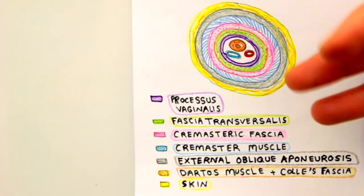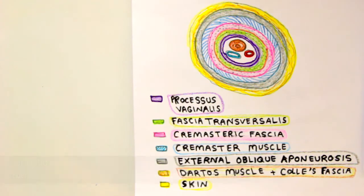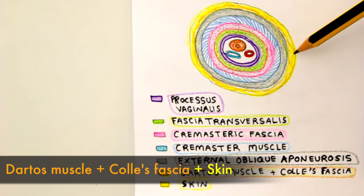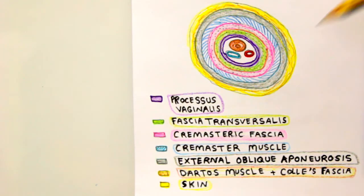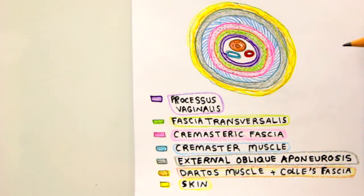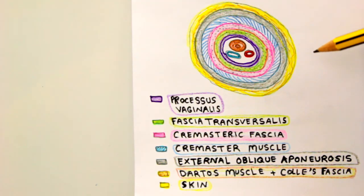So we have three spermatic fasciae: external spermatic fascia, cremasteric fascia, and internal spermatic fascia. The outermost yellow ring represents the subcutaneous tissue and Colles' fascia in the scrotum. The layers around the spermatic cord are almost the same as the layers of the testes. When the spermatic cord starts from the scrotal region, it has the skin of the scrotum, which contains a subcutaneous muscle known as the dartos muscle. The dartos muscle plus Colles' fascia form this outermost ring.